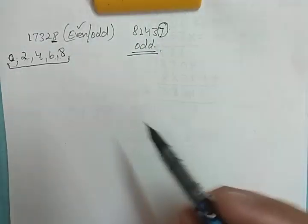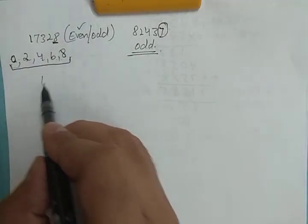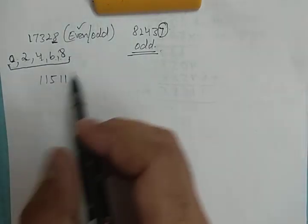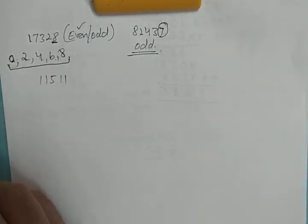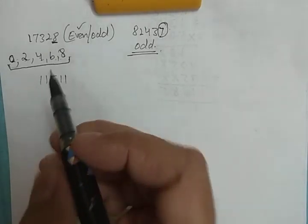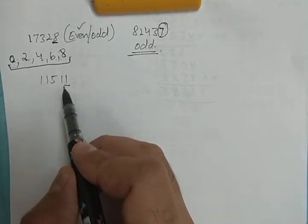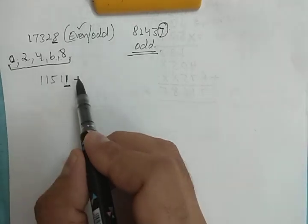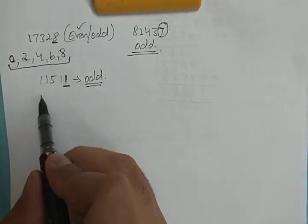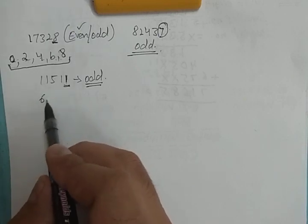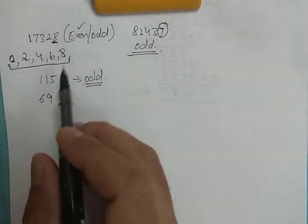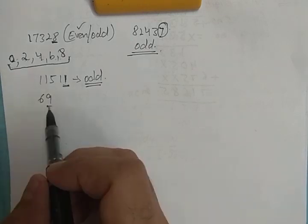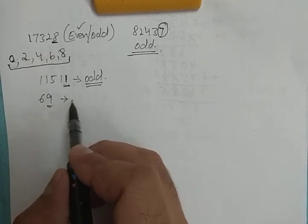More examples: 11511 — check the digit at the ones place, it is 1. Since 1 is not a multiple of 2, it is an odd number. 69 — check the ones place, it is 9. Since 9 is not a multiple of 2, 69 is an odd number.